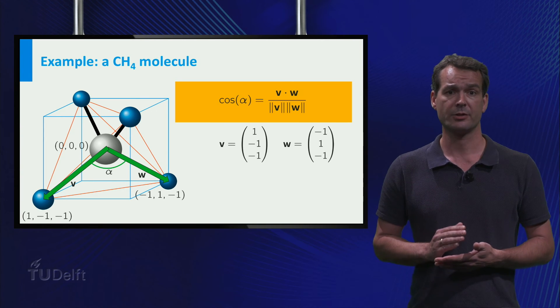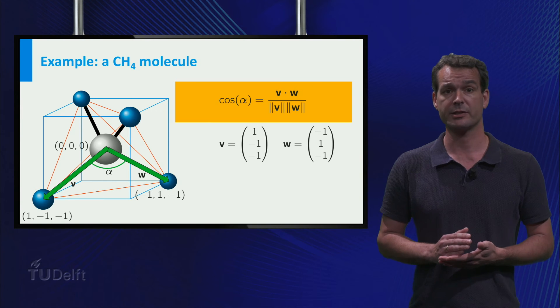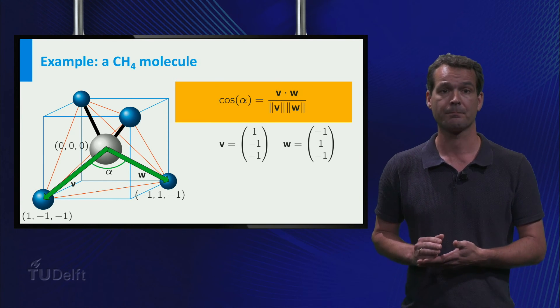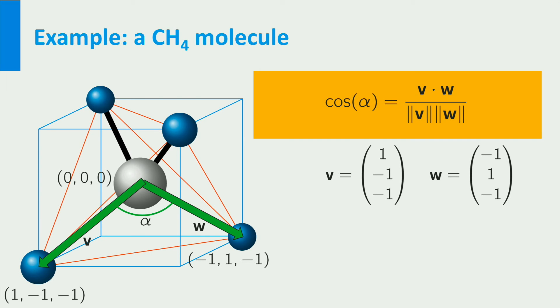We can choose coordinates such that the carbon atom is at the origin and the other atoms have coordinates plus and minus 1. Then v is the vector and w is. From the angle formula, we find that the cosine of alpha equals minus 1 third, so that alpha is approximately 109 degrees.